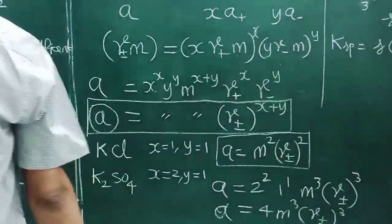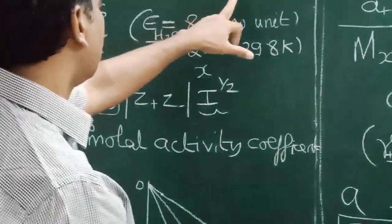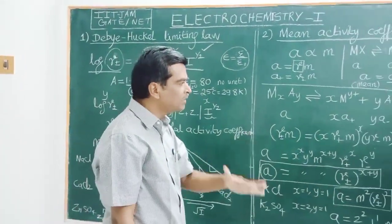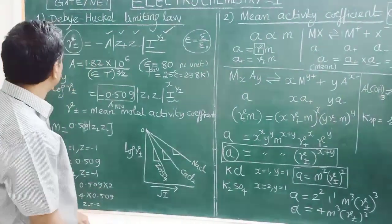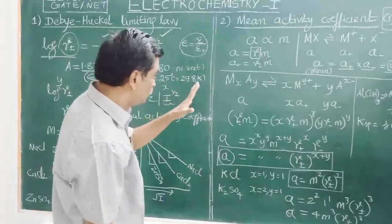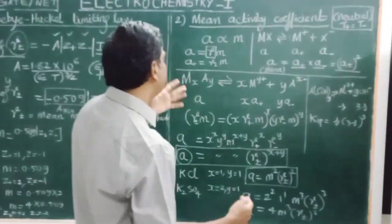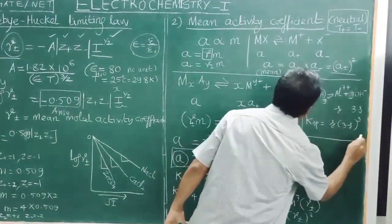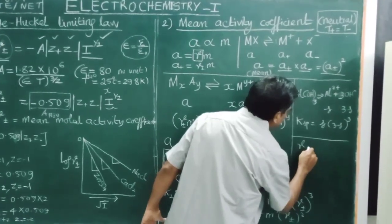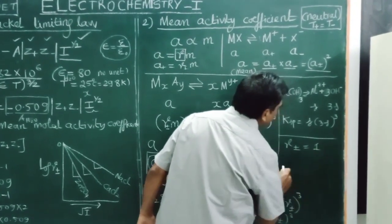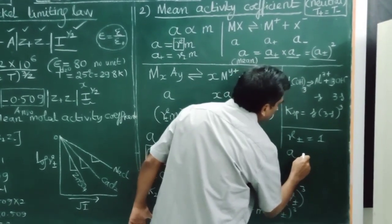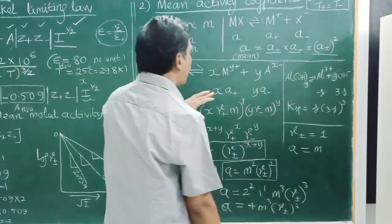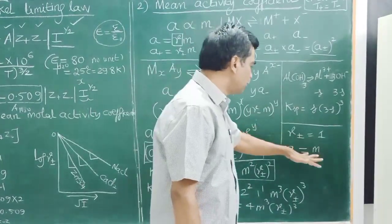The activity coefficient is always less than 1. At infinite dilution or very low concentration, gamma equals 1. So for a very dilute solution the activity of the electrolyte equals its molality or concentration.